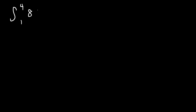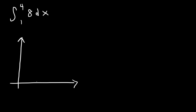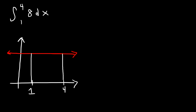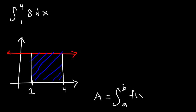In this video we're going to focus on evaluating definite integrals using geometry. So what is the value of this definite integral? The first thing we need to do is graph the function. So y is equal to 8 — basically that's a horizontal line at 8 — and we're interested in the interval from 1 to 4. The value of the definite integral is the area of the shaded region. Make sure you know this: the area is equal to the definite integral of f of x from a to b.